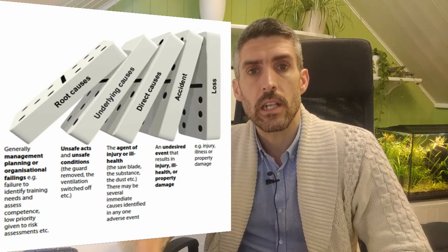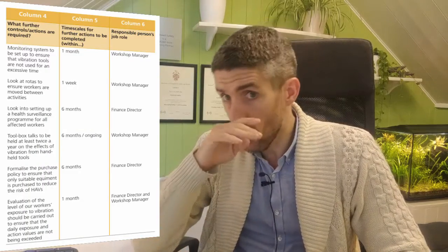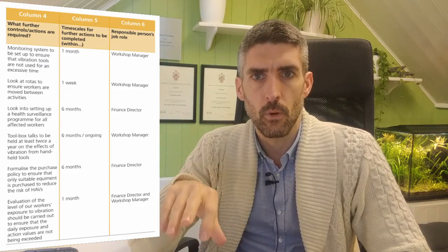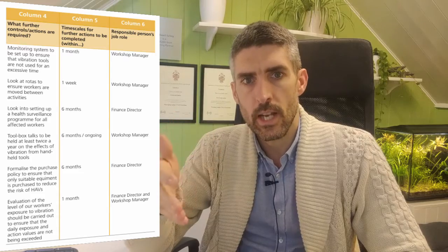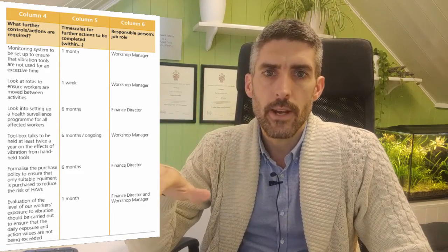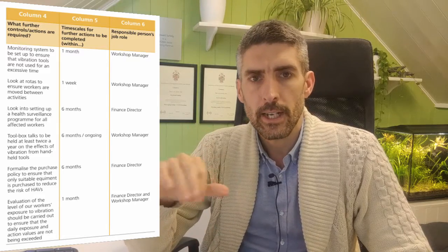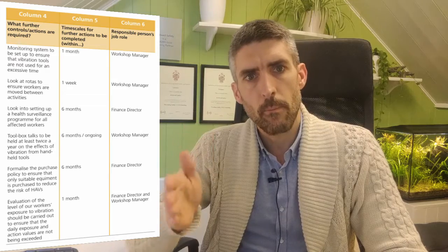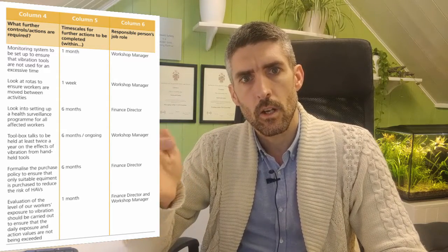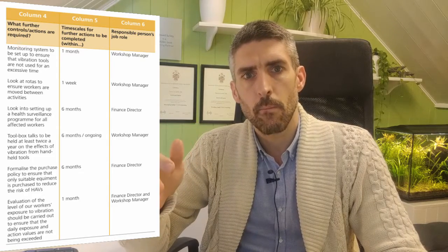With column six, just keep it simple and practical — this is who is actually going to be responsible for implementing that particular control measure. Don't go down any rabbit hole of who the duty holder is under health and safety legislation. Just put down who's going to be responsible, and a job title is fine — you don't have to name specific people. Keep it nice and simple and practical.